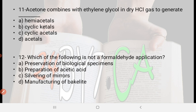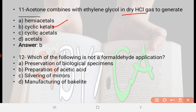Next: Acetone combines with ethylene glycol in dry HCl gas to generate — option A: hemiacetals, option B: cyclic ketols, option C: cyclic acetals, option D: acetals. The right answer is option B, cyclic ketols. Acetone combines with ethylene glycol in dry HCl gas to generate cyclic ketols.